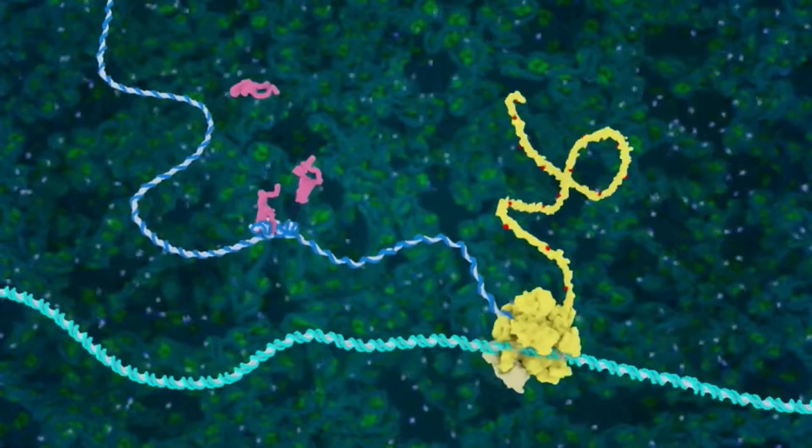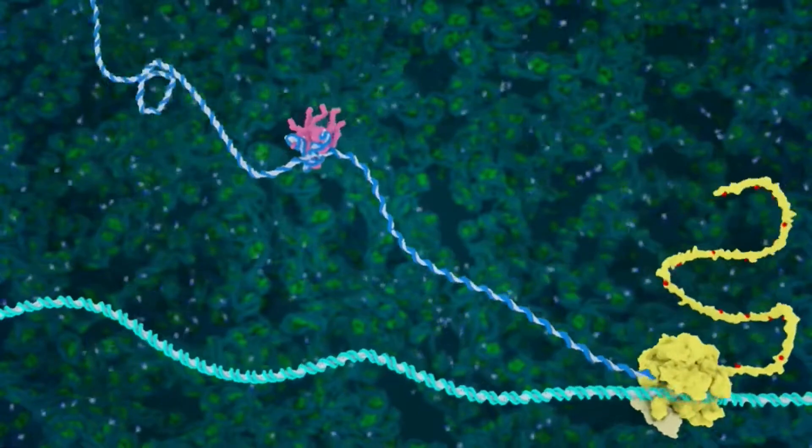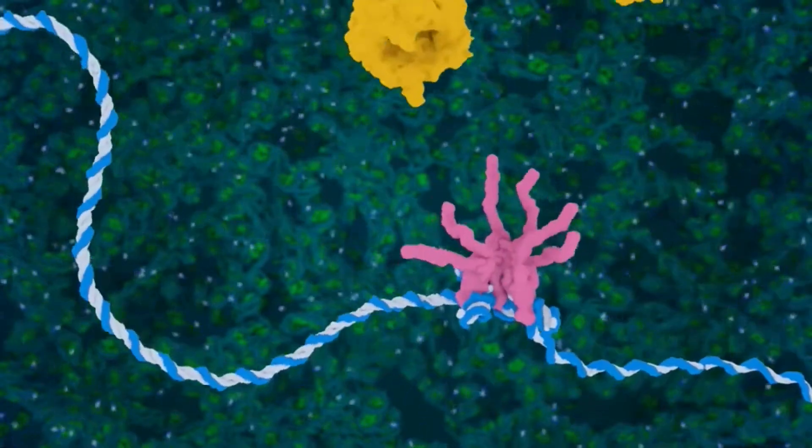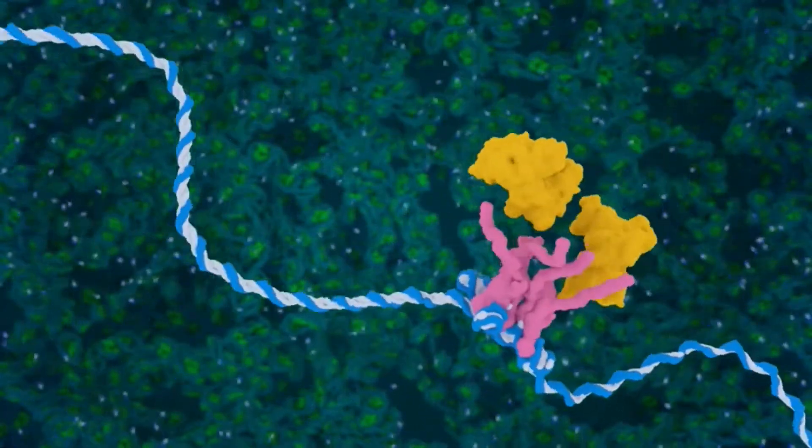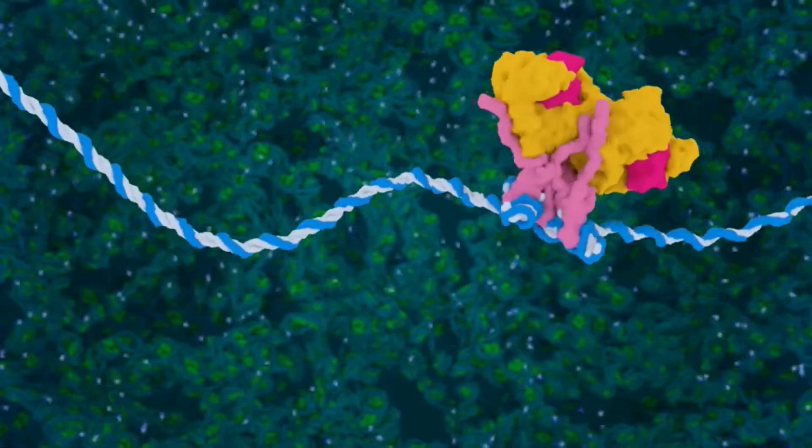The viral RNA transcript contains a short sequence that binds to a protein called REV, in pink, that attracts cellular proteins that direct the RNA to exit the nucleus through the nuclear pore.